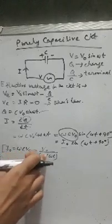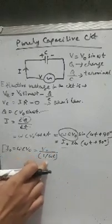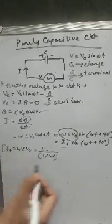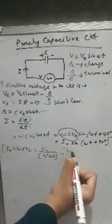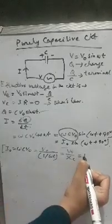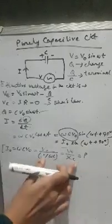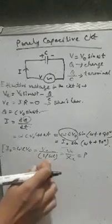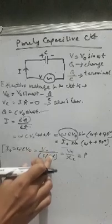In our previous equation we had ωCV₀. In the next step we are writing V₀ divided by 1/ωC. When it moves up it becomes ωCV₀, so from the second step we can move back to the first step. We are writing it in this way so that we can represent 1/ωC as Xc. Xc is the capacitive resistance, denoted by Xc, and its value is 1/ωC.